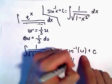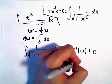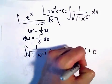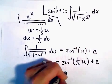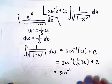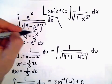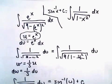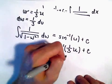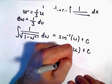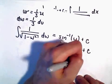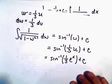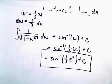So arc sine, we said w. That was the same thing as 1 third u. So we have 1 third times u plus c. And, well, we didn't start with u. We started with x's. And, again, we said u was equal to e to the x. So that's what I'm going to plug in. So arc sine of 1 third e to the x plus c. And that will be our anti-derivative.